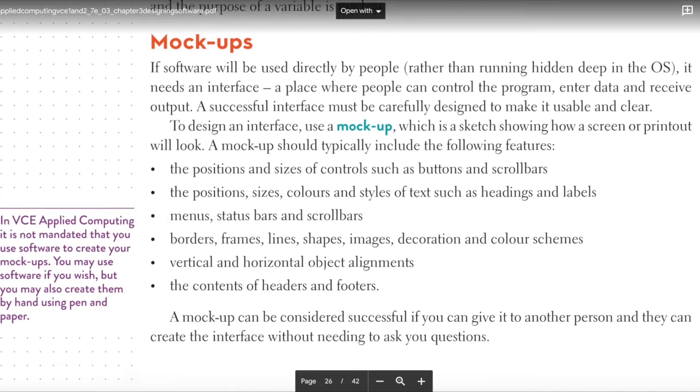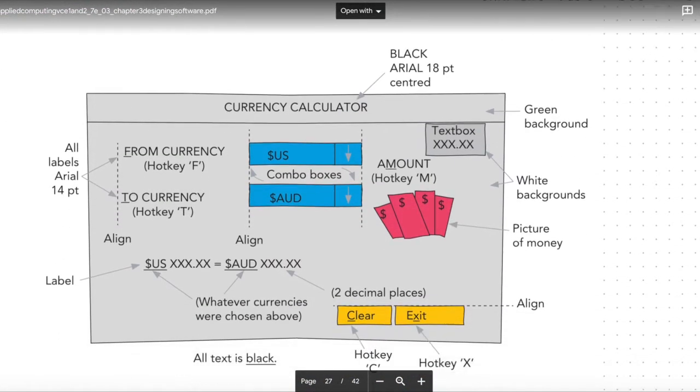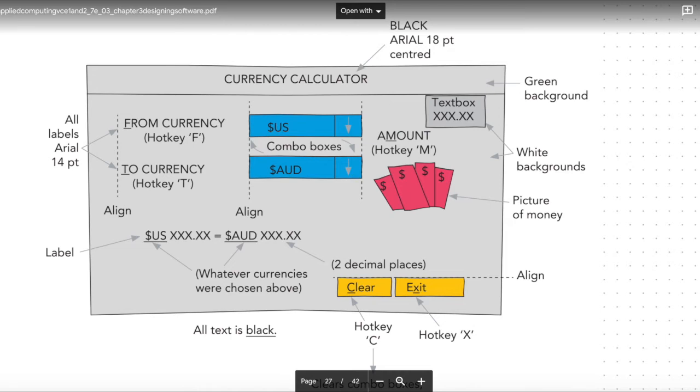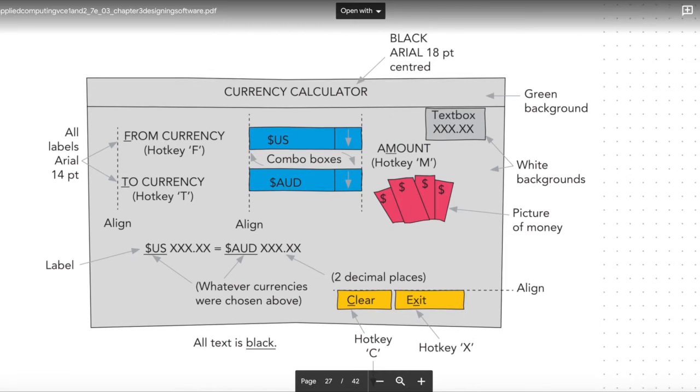Looking at mockups as well, here's an example of a mockup of a spreadsheet. As you can see, mockups will show the layout of things, what the different colors are, what sort of fonts you're using, the size of your fonts. All these little annotations or labels are all over the place showing where everything is and what everything does. That's an important part of any mockup or layout diagram—pretty much the same thing.